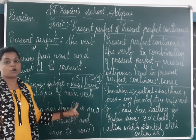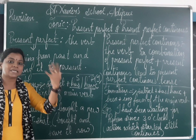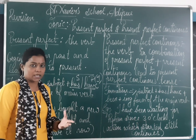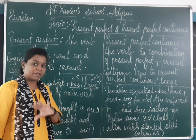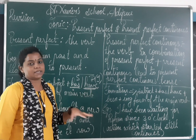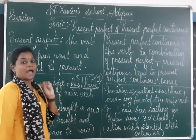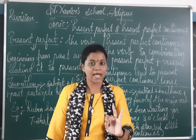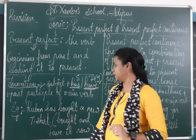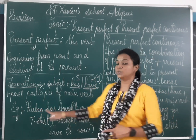Subject plus has or have, plus the past participle of the main verb, which we put into past tense form. That is our formation: subject, has or have, past participle of the verb, and the rest of the sentence. For example: Ruben has bought a new t-shirt.